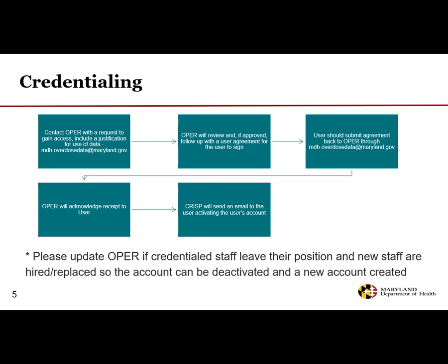New users must complete the following steps to gain access. Contact OPER with a request and justification for use of data at mdh.overdosedata at maryland.gov. OPER will review and, if approved, follow up with a user agreement to sign. Users should submit the agreement back to OPER, who will acknowledge receipt. CRISP will then send an activation email. Please update OPER if credentialed staff leave so accounts can be deactivated and new accounts created.